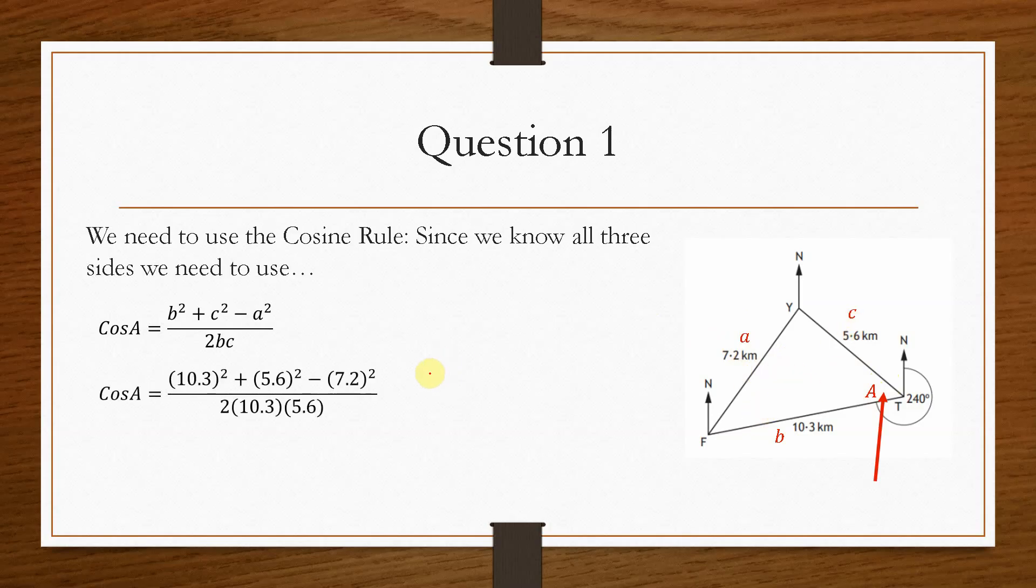So we just substitute in the values, and then that will give us a value of 0.742. Now for A, we'll take inverse cos of this, and that gives us a value of 42 degrees. And that is this proportion in here. So therefore the bearing of Y from T is 240 plus 42, which will give us 282 degrees.